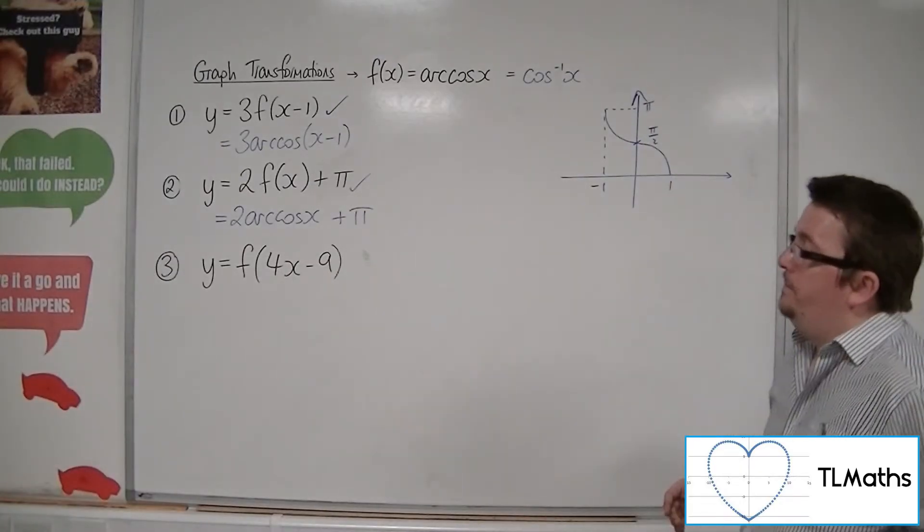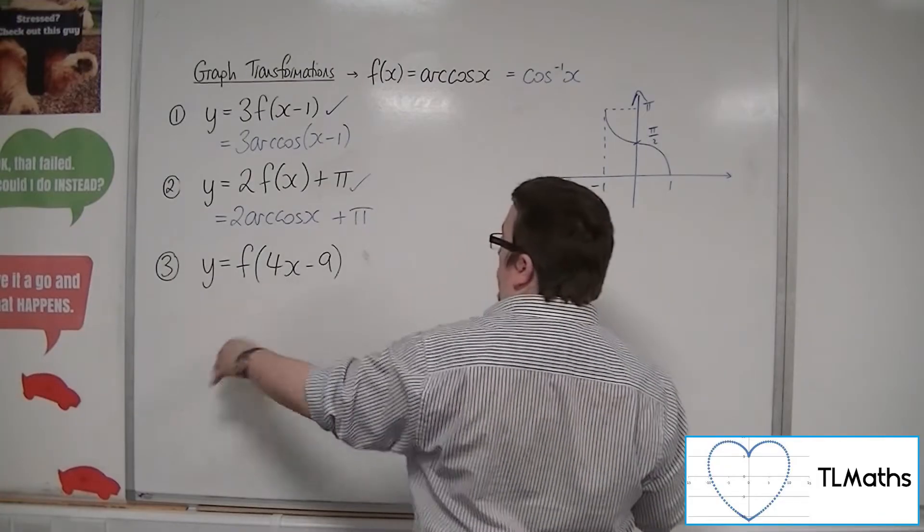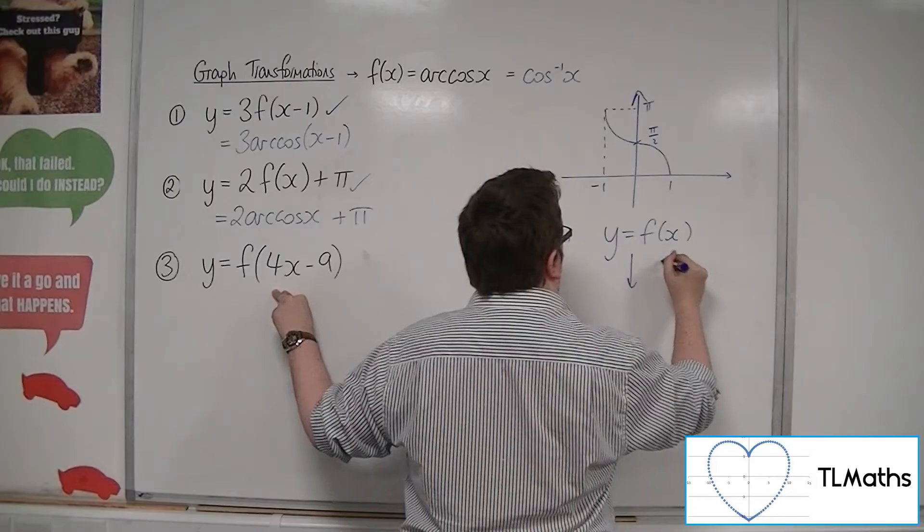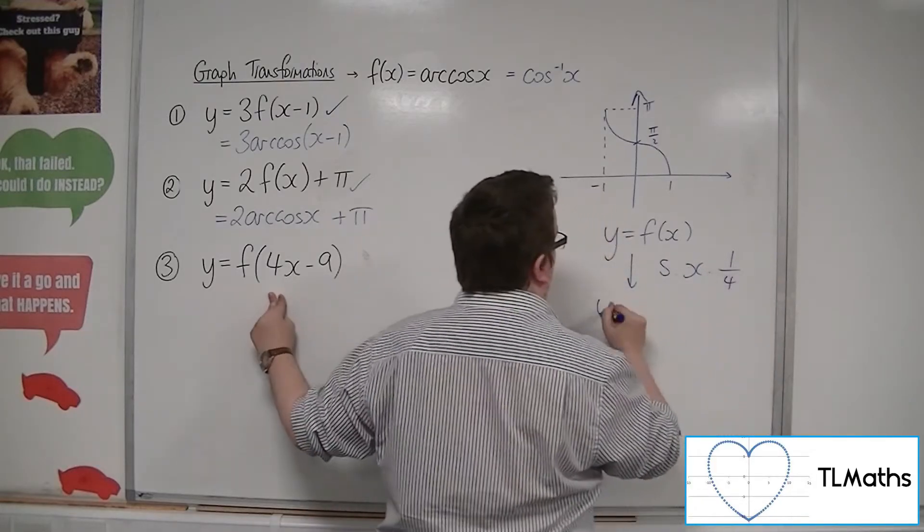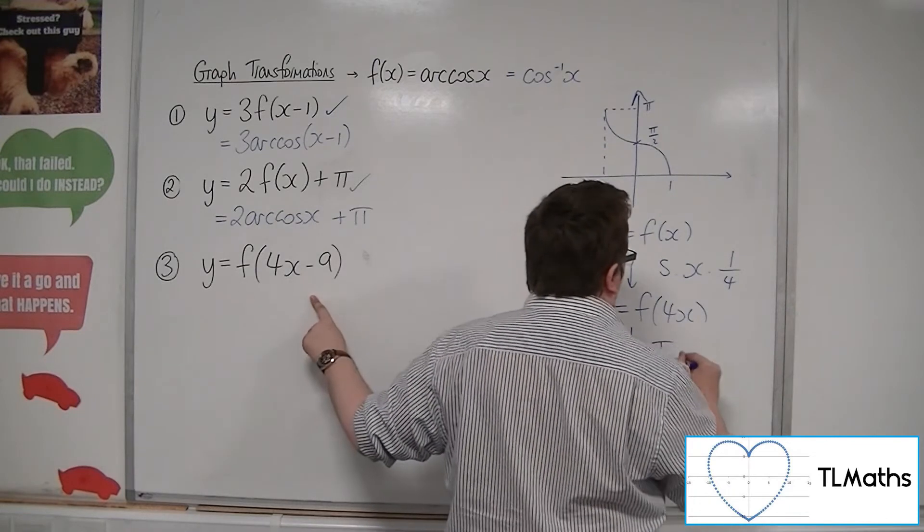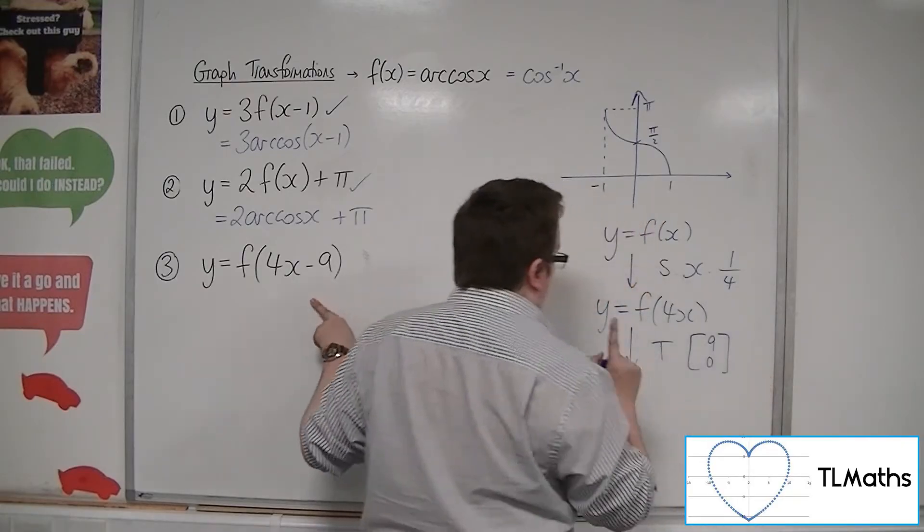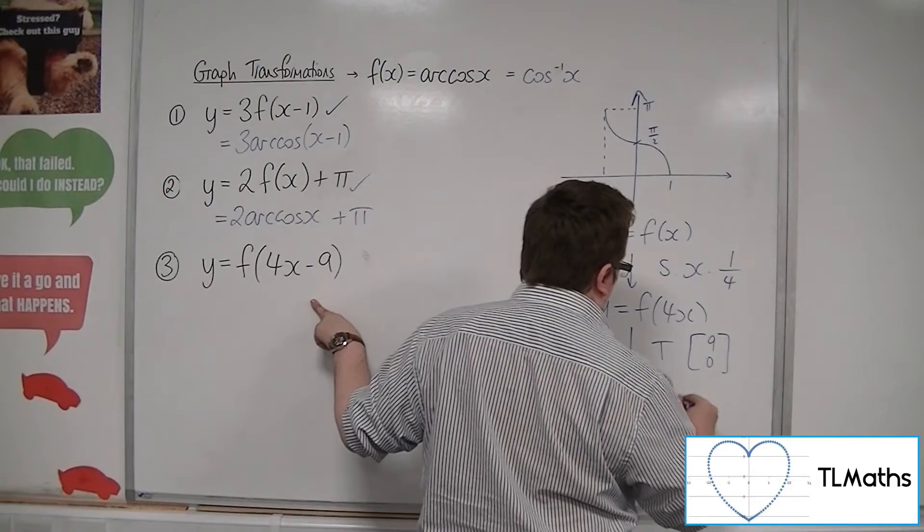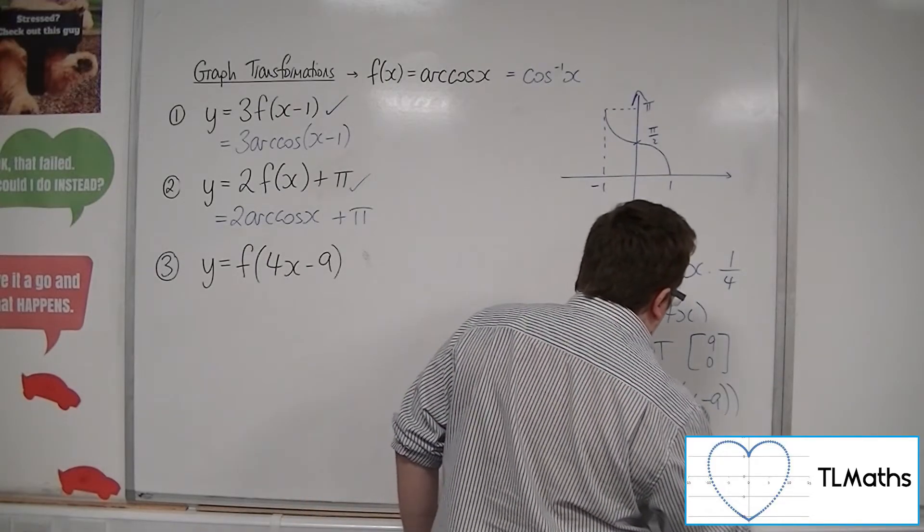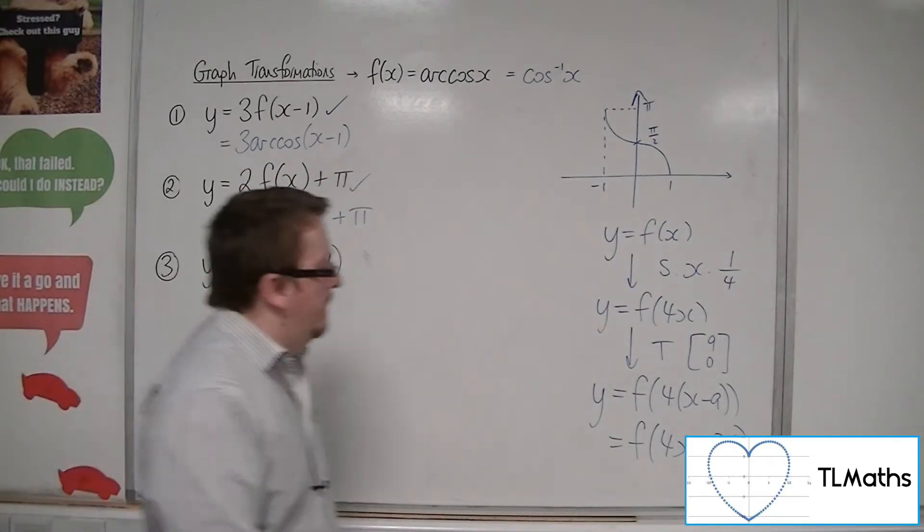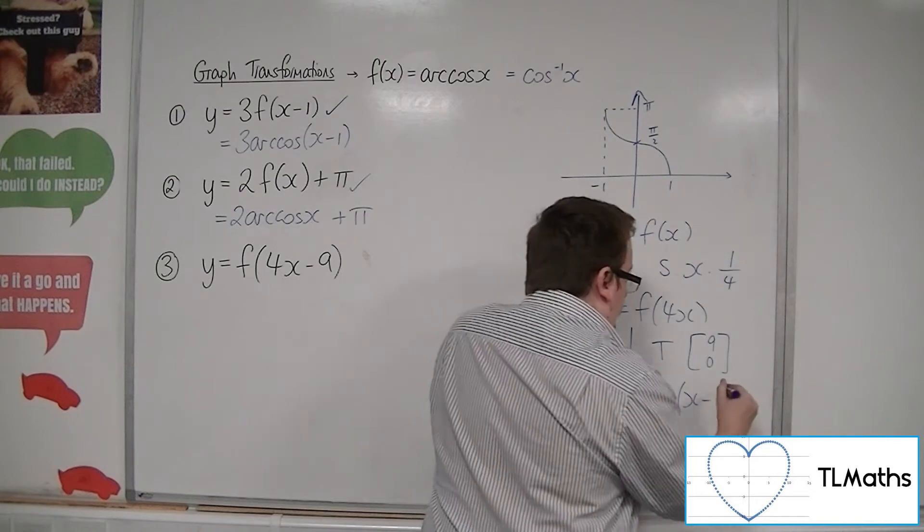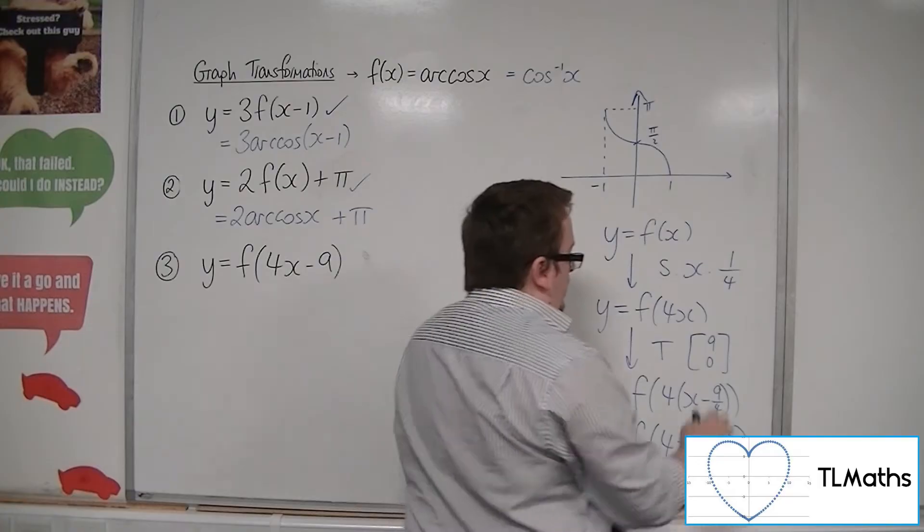y equals f of x minus 9. So, what are we seeing? We're seeing a stretch parallel to the x-axis, factor a quarter. So y equals f of x. So stretch, x-axis, factor a quarter, will get us the y equals f of 4x. Then we've got this 9, this minus 9. So that's looking like a translation by the vector 9, 0. But, what's going to happen is that we've got f of 4 lots of x minus 9, when the x is replaced with x minus 9, which gets us f of 4x minus 36. We just want 9. So in order for that to be 9, this would have to have been 9 quarters, to multiply by the 4 to make the 9. So this must be 9 quarters.